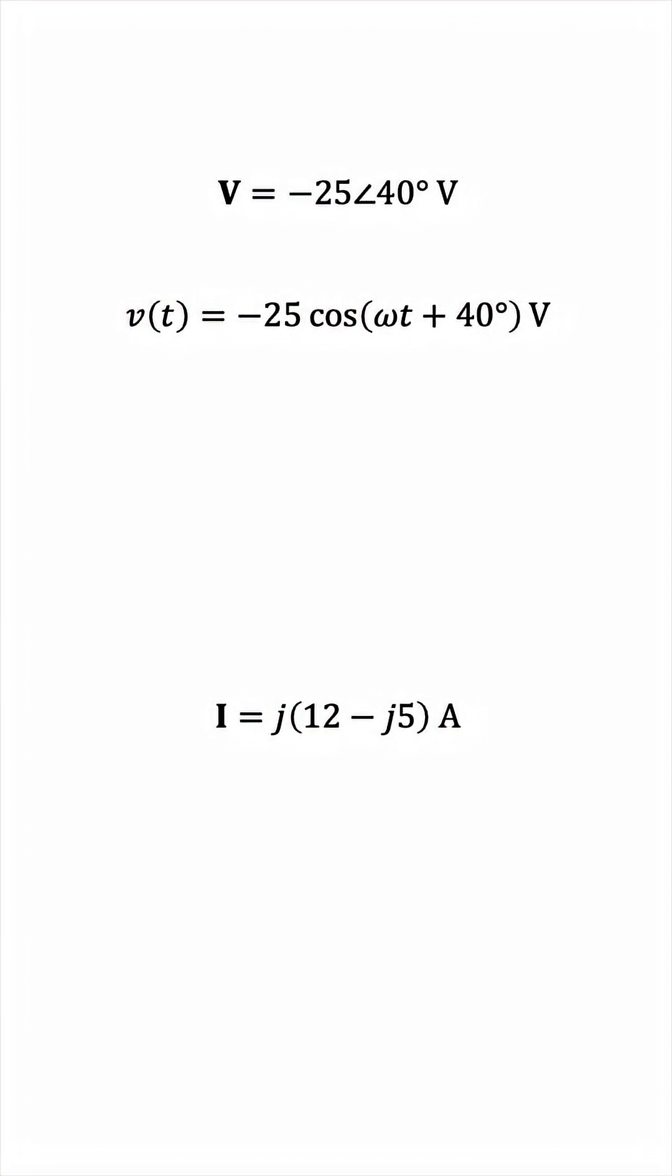The way we achieve this is by using trigonometry. We know that adding or subtracting 180 degrees to a cosine negates it, makes it negative. We already have a negative cosine, so we can make it positive by adding 180 to the phase, making the phase 220 degrees, or subtracting 180 from the phase, making it negative 140 degrees.